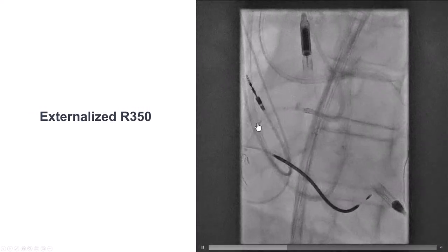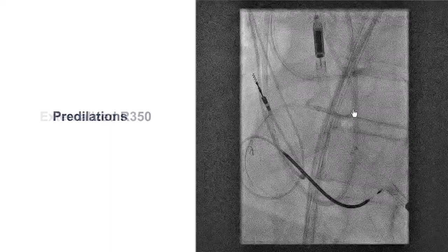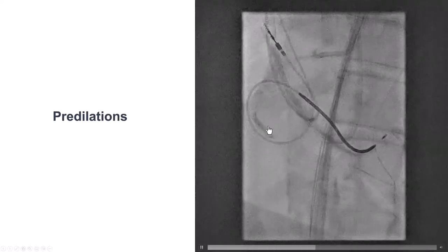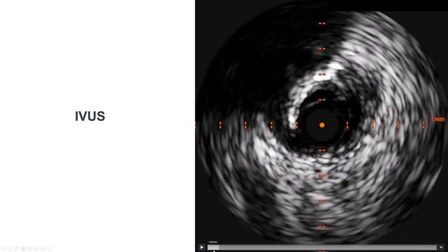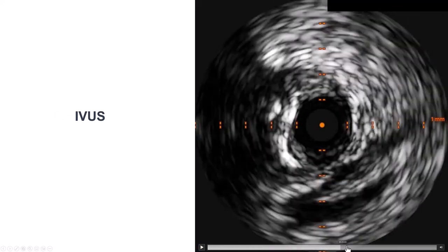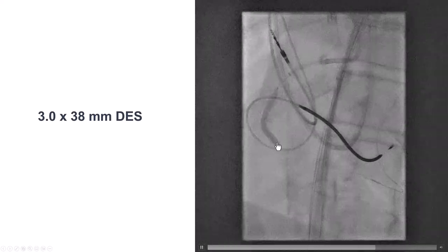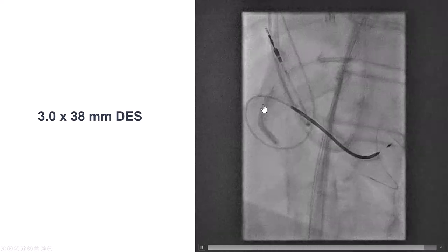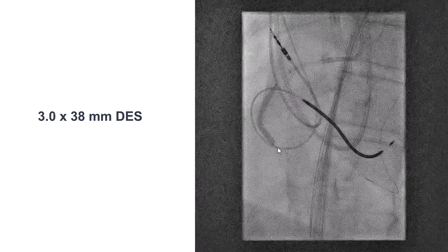We inserted the retrograde Caraval into the guide extension and then externalized an R350. We did multiple predilatations. IVUS showed eccentric calcification throughout the right coronary artery. We then stented the vessel with multiple drug-eluting stents. Notably, having gone into the extraplaque space actually helped us expand the stents better than it would have otherwise.